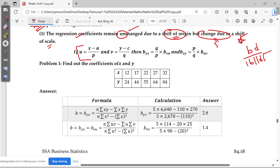What happens is u equals x minus a by b and v equals y minus c by q. So if you want to fix this, then BYX and BUV will have a shift with respect to q by b.